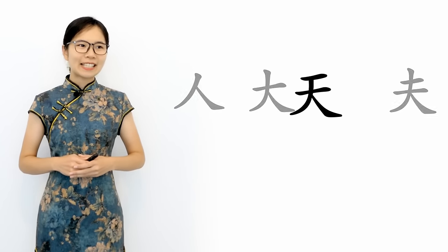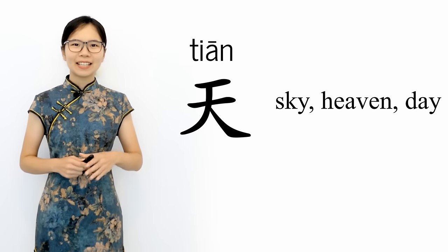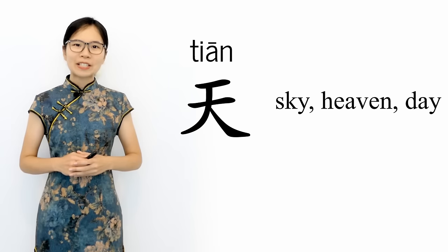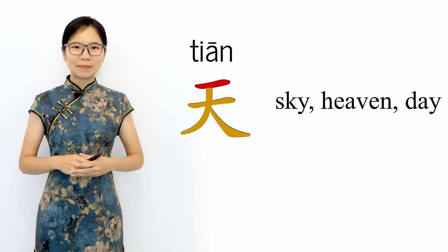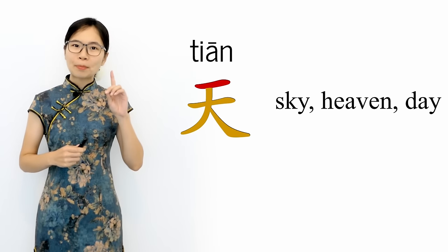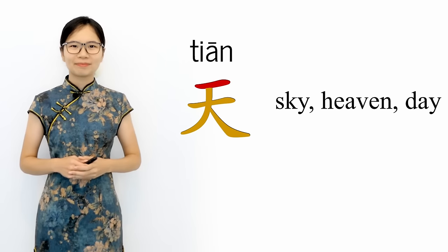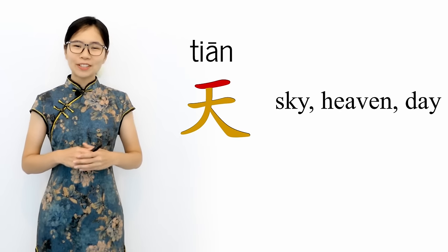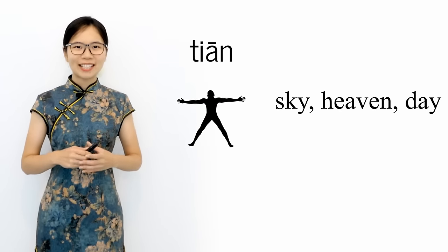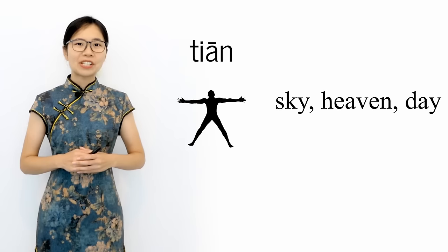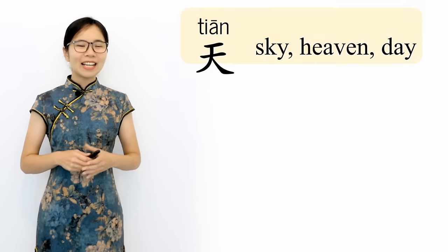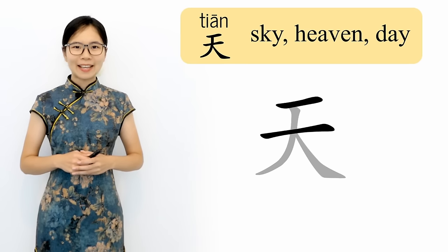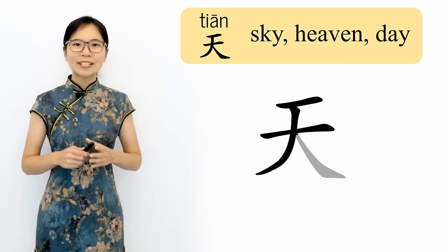Our next character is 天, which means sky, heaven, or day. Some people say that this character originated with the top line representing the number one on top of the character for big, so this character refers to the number one big thing — in other words, the heavens or the sky. You can also imagine this character representing a giant so tall that his head reaches the sky. 天 is written using four strokes: first the two horizontal lines starting with the top line, then the big downward stroke to the left, and finally the shorter downward stroke to the right.